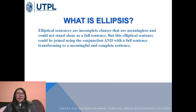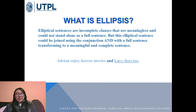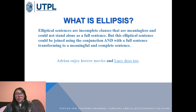What is ellipsis? Elliptical sentences are incomplete clauses that are meaningless and could not stand alone as a full sentence, but this elliptical sentence could be joined using a conjunction and with a useful sentence, transforming it into a meaningful and complete sentence. For example: 'Adrienne enjoys horror movies and Lucy does too.' 'Adrienne enjoys horror movies' is a complete and meaningful sentence, while 'Lucy does too' is our elliptical sentence that needs another sentence to have sense, and it is joined with the conjunction 'and.'